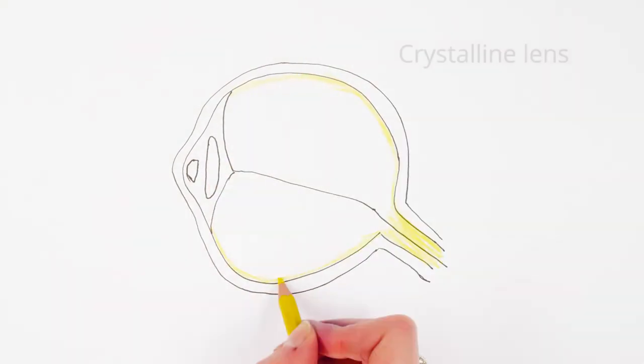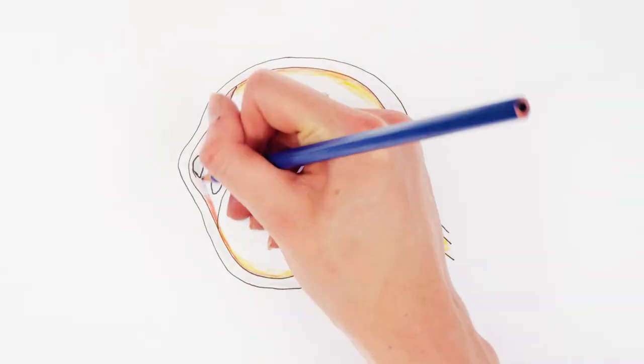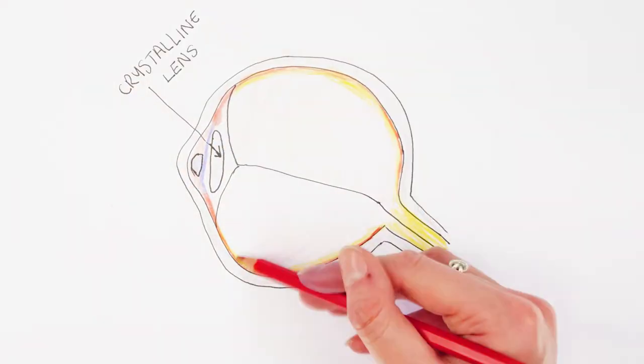When we accommodate, the lens inside our eye, which is called the crystalline lens, thickens and increases its power. This thickening is brought about by contraction of ciliary muscles which hold the crystalline lens in its place.